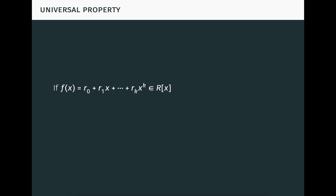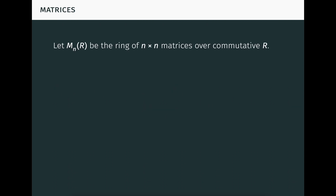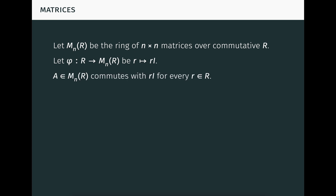Concretely, if f is the polynomial seen here, then f of s, understood to mean phi_s of f, is the element of S seen here. We can specialize this to the case of matrices. Let M_n(R) be the ring of n by n matrices over the commutative ring R. Let phi from R to matrices over R map each scalar r to the scalar matrix r times I. Then phi is a ring homomorphism. Moreover, any matrix A over R commutes with the scalar matrices, so by the universal property, we have a substitution homomorphism phi_A from polynomials over R to matrices over R.